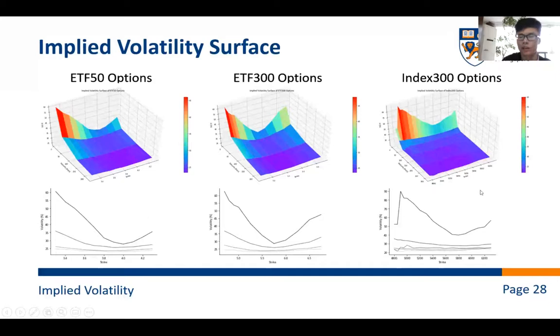And here are the implied volatility surface and implied volatility curves. And we can see that the curve with shorter maturity is shaped like a smile and the curve with longer maturity is much flatter.